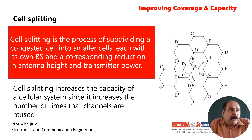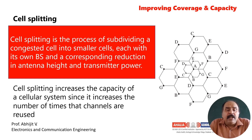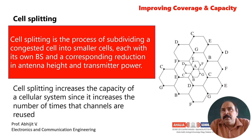Cell splitting is the process of subdividing a congested cell into smaller cells, each with its own base station and a corresponding reduction in antenna height and transmitted power.